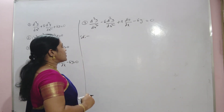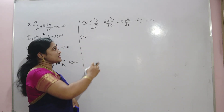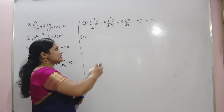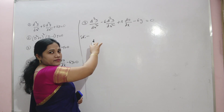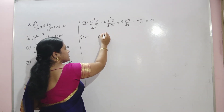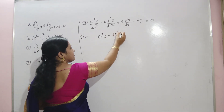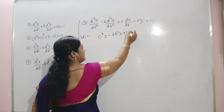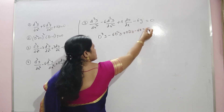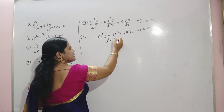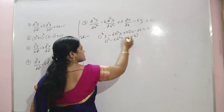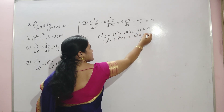The fourth problem is: d³y/dx³ − 6d²y/dx² + 11dy/dx − 6y = 0. The symbolic form is D³y − 6D²y + 11Dy − 6y = 0, or (D³ − 6D² + 11D − 6)y = 0.